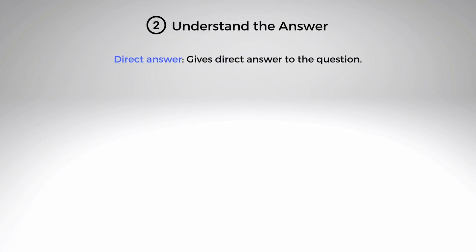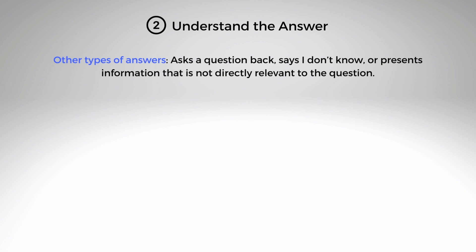Tip number two: understand the answer. There are three main types of TOEIC part two answers. There are direct answers that give direct answers to the question. There are indirect answers that indirectly imply the actual answer. And there are other types of answers that either counter-question the original question, reply that the answerer does not know the answer, or provide irrelevant information.